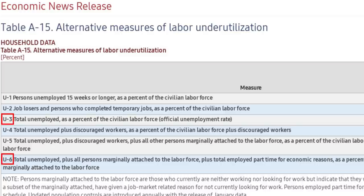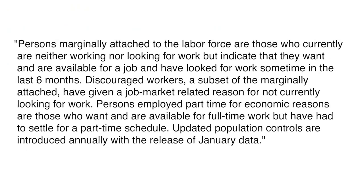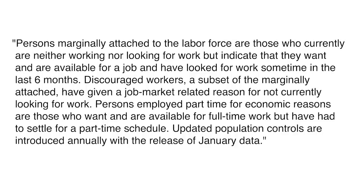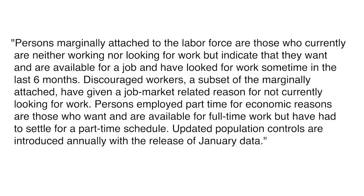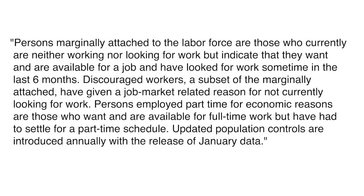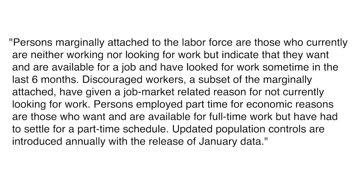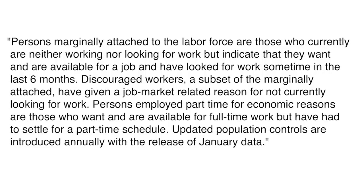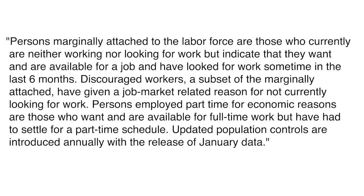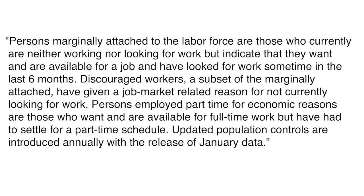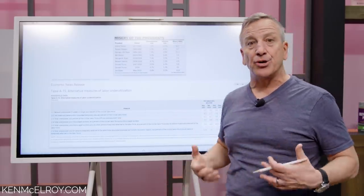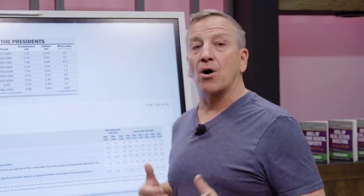U-6 includes persons marginally attached to the labor force — those who are currently neither working nor looking for work, but indicate they want to and are available for a job and have looked for work sometime in the last six months. Discouraged workers, a subset of the marginally attached, have given a job-related reason for not currently looking for work. Persons employed part-time for economic reasons are those who want and are available for full-time work but have had to settle for a part-time schedule. These unemployment rates listed under U-3 don't represent the true misery index; you really need to look at all people who are unemployed.